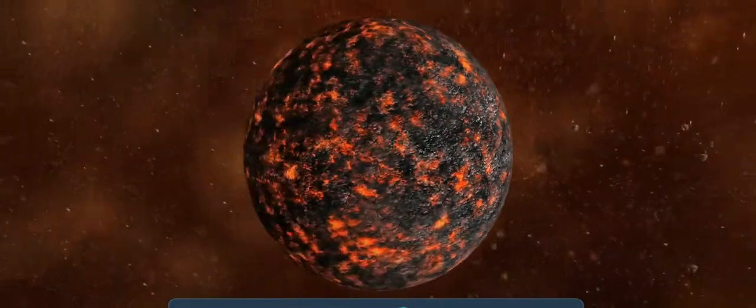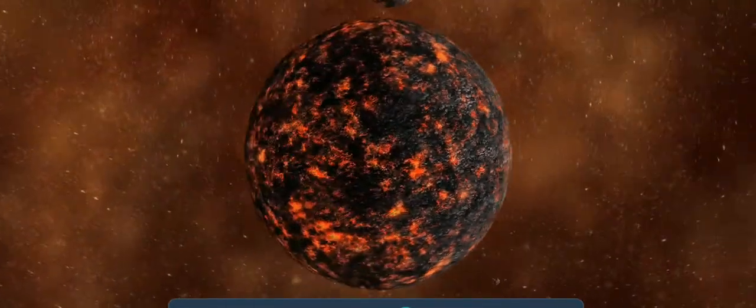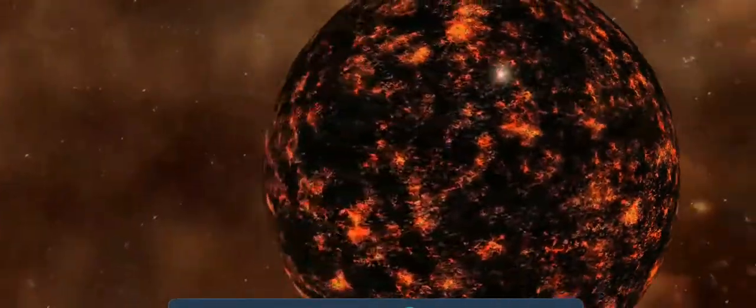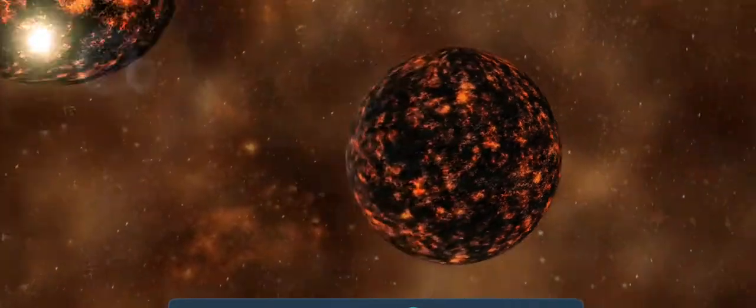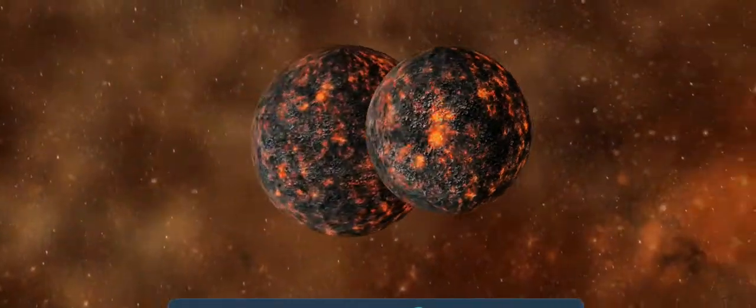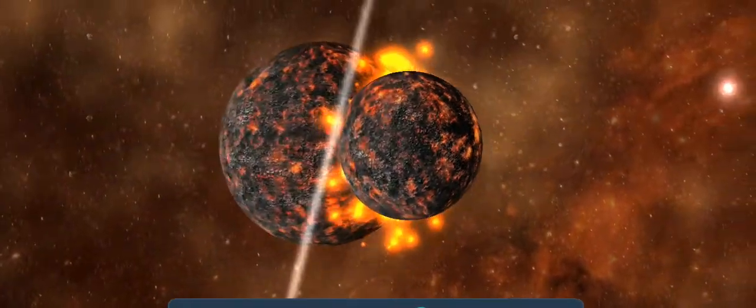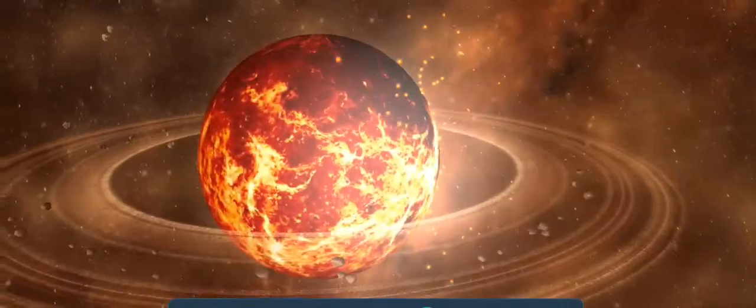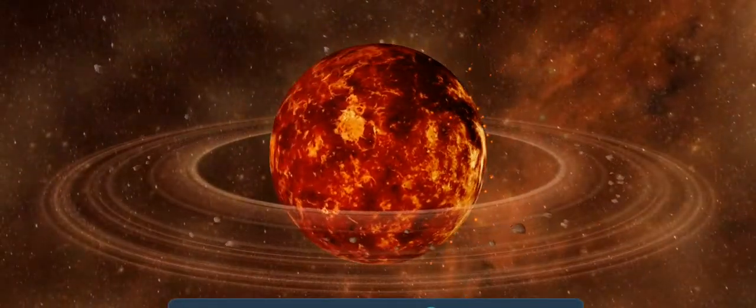Around 170 million years after the formation of the Earth, a similarly young planet known as Theia struck the Earth's still soft crust. Theia was demolished after the collision and it merged with the Earth. The Earth's mass therefore increased, effectively reaching its current mass.